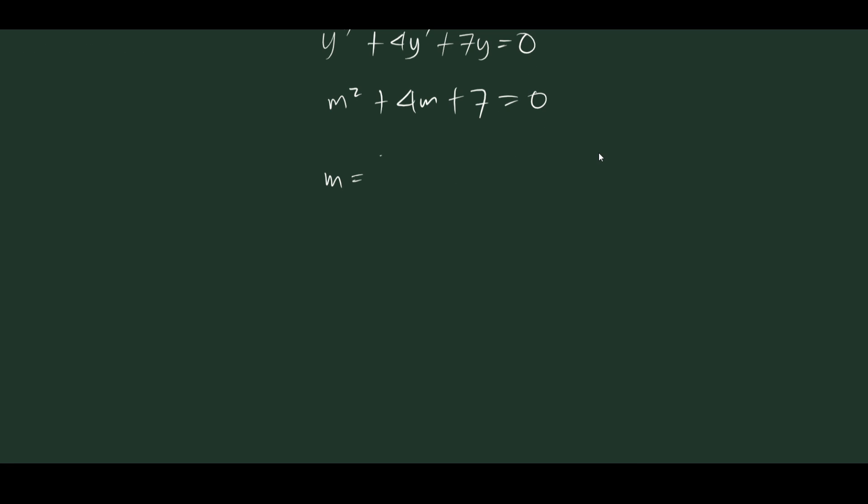So m is equal to negative 4 plus minus, so b squared, that will be 16 minus 4ac, 4 times 7 because a here is 1, so that will be 28. 28 all over 2a, since a is 1, this is 2.